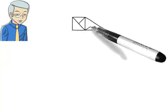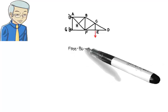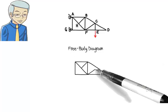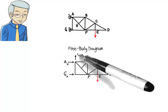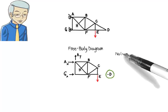Let's look at a few examples. Here, Rule 1 applies to joint D, therefore CD and DE are zero-force members.